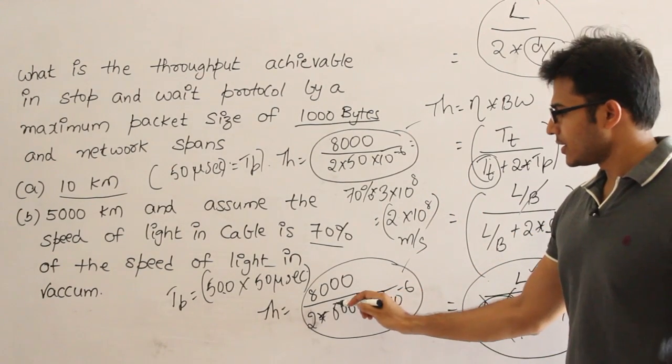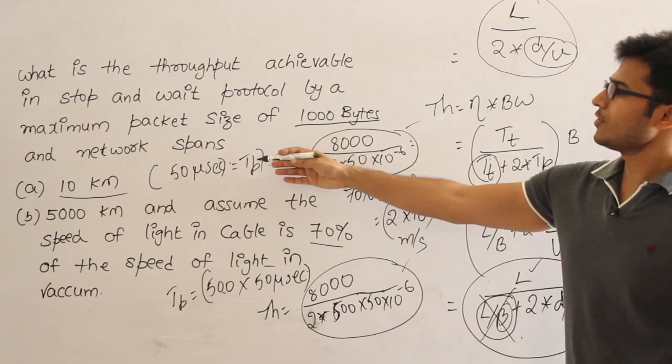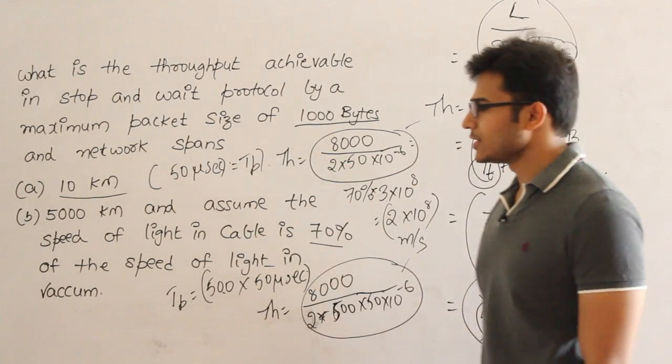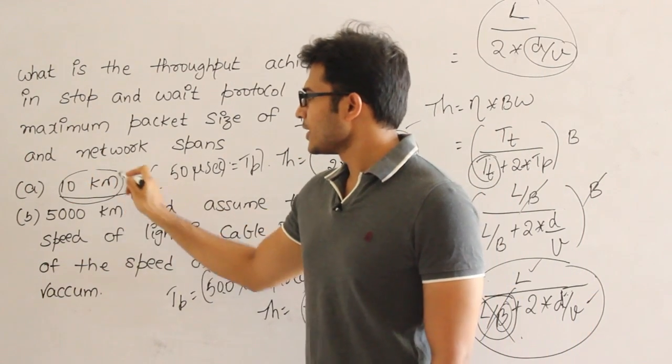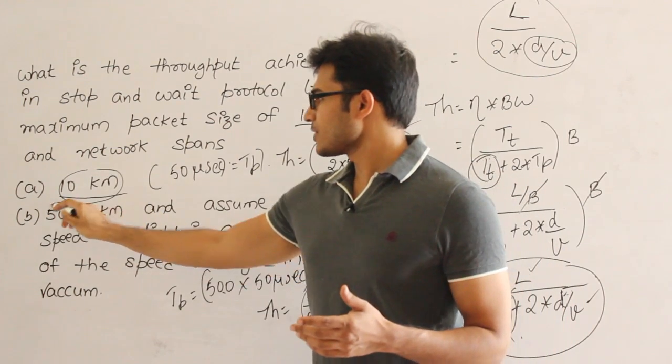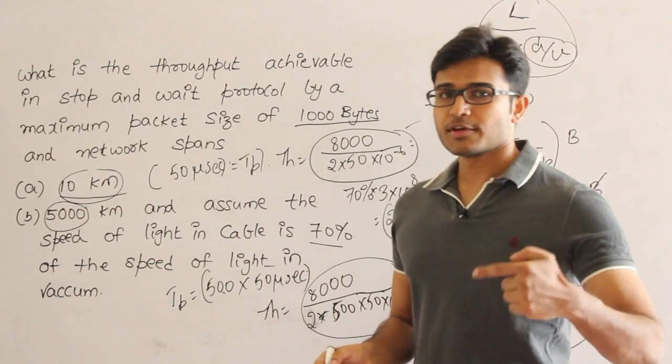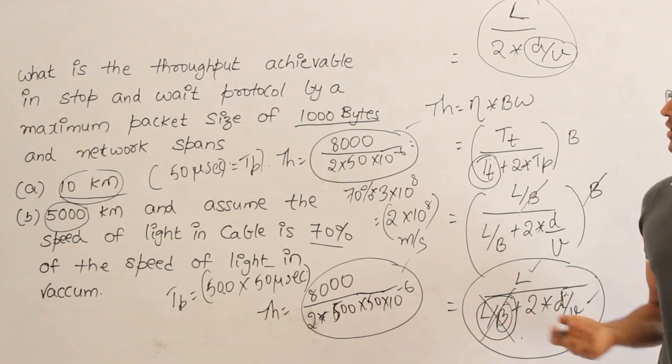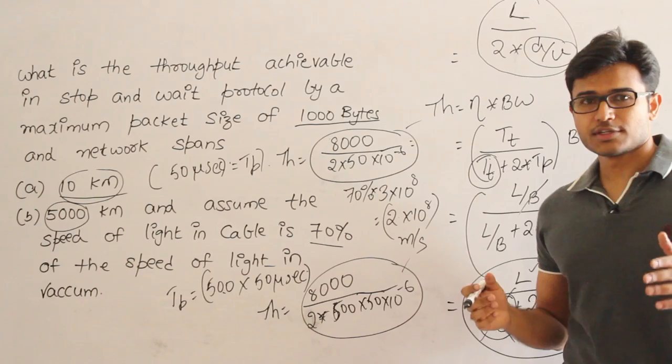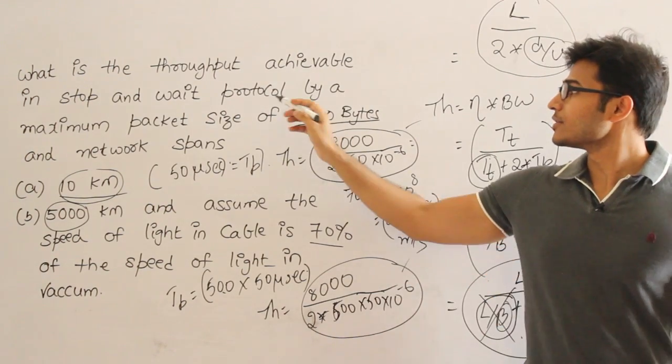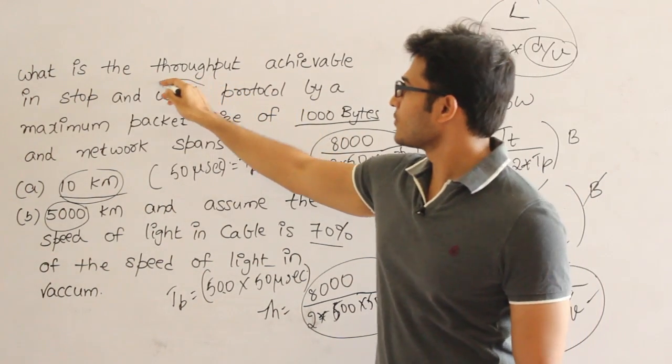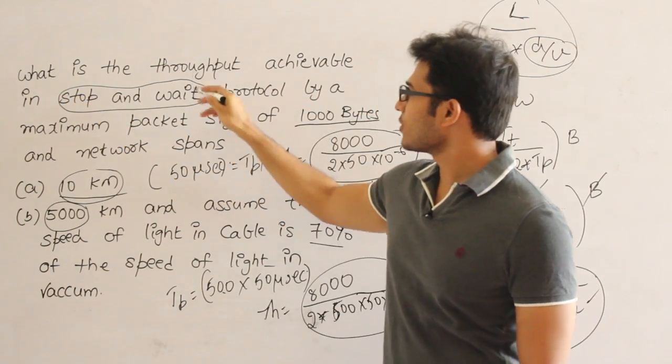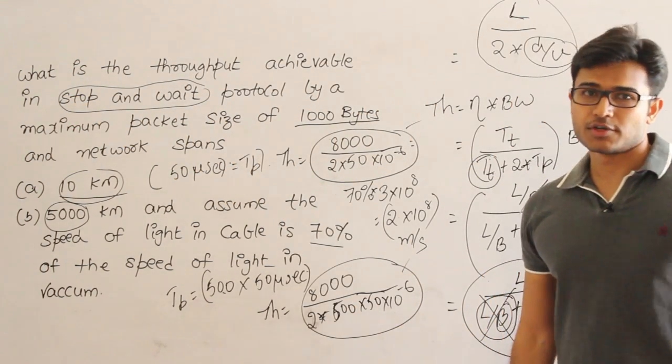What you could learn from this one is as the length of the LAN increases, which means if the distance is initially 10 kilometers then the efficiency is better. As we increase the distance by 500 times the throughput decreases by 500 times. That is what is the moral of this question. So moral of this story is as the length increases the efficiency and throughput decreases in case of stop and wait. Therefore stop and wait is useful only for LANs but not for WANs. Maybe that is what you should understand.